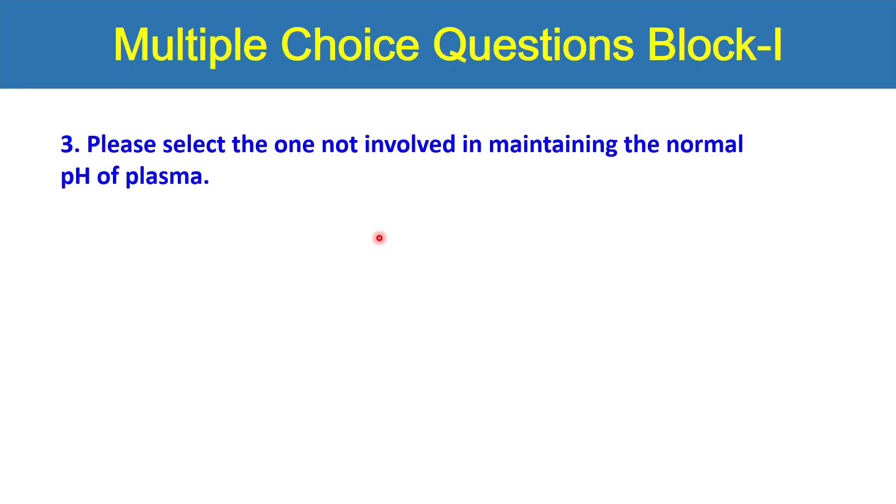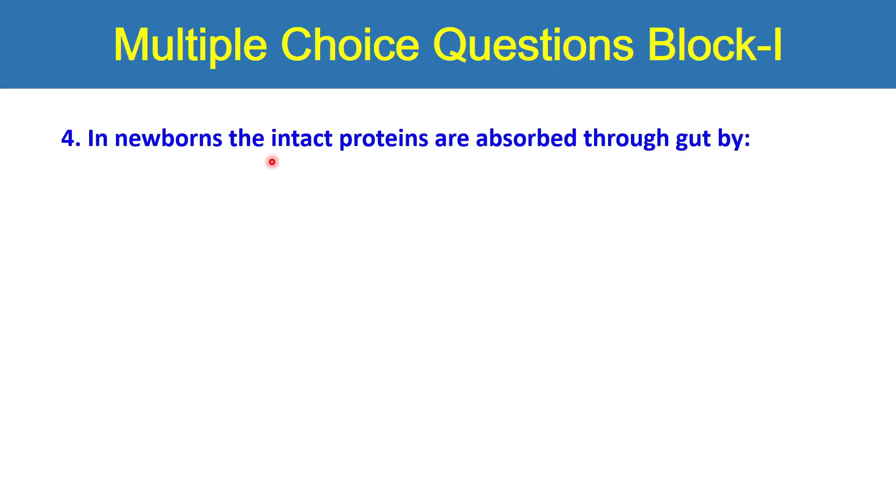Number three, please select the one not involved in maintaining the normal pH of plasma: intracellular buffers, plasma buffers, respiratory mechanism, heat mechanism or renal mechanism? The next question is in newborns the intact proteins are absorbed through gut by: passive diffusion, simple diffusion, active transport, or facilitated diffusion?